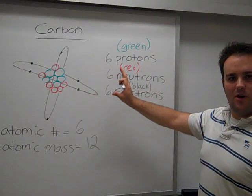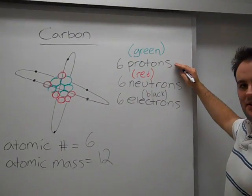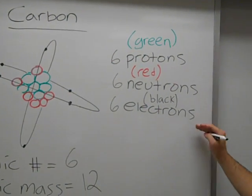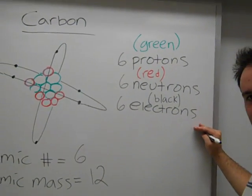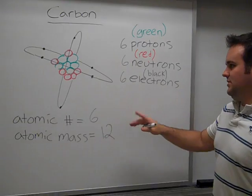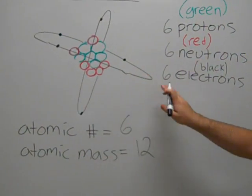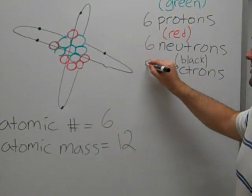So let's revisit the normal carbon atom again. We have six protons and six neutrons in the nucleus, and surrounding that nucleus is six electrons. Let's see what happens when we get rid of one of these electrons. Let me erase this one right here. So now we have five electrons.